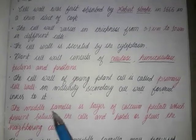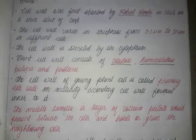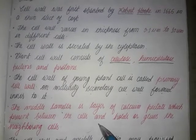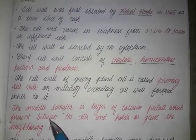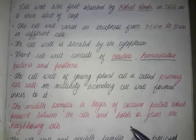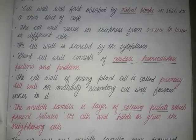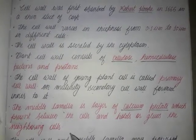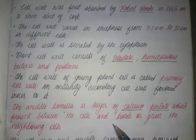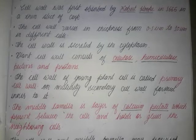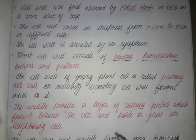Now let's talk about an important point — the middle lamella. The middle lamella is the layer made up of calcium pectate. This layer is present between neighboring cells, sitting between one cell wall and another. The middle lamella is made up of calcium pectate, and its function is to hold or glue neighboring cells together.